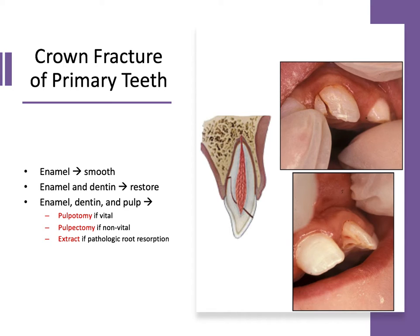What about crown fracture of a primary tooth? Remember, the enamel of primary teeth is thinner and the pulp is relatively larger, so the chance of a crown fracture involving the pulp is greater. If it's just enamel, we smooth it for the patient's comfort. Enamel and dentin, we restore it aesthetically. If it's enamel, dentin, and pulp, we need endodontic treatment to maintain that primary tooth — a pulpotomy if it's vital, a pulpectomy if it's non-vital, and extraction if there's pathologic root resorption on x-rays.